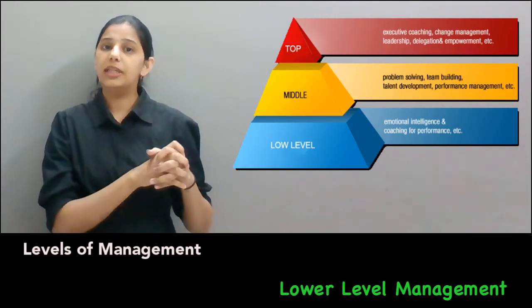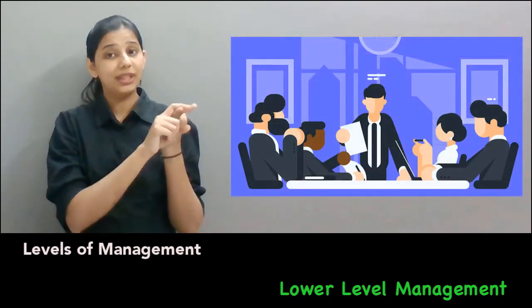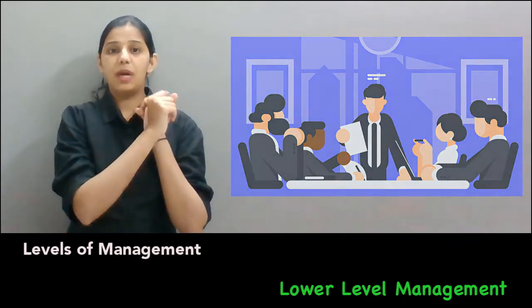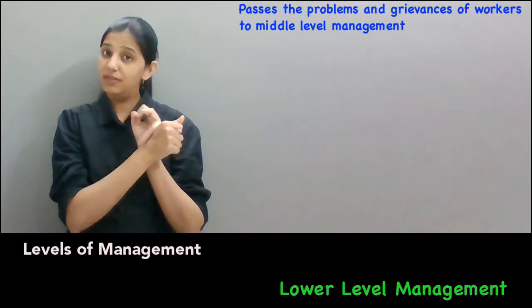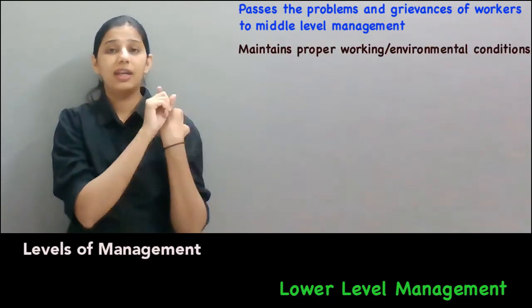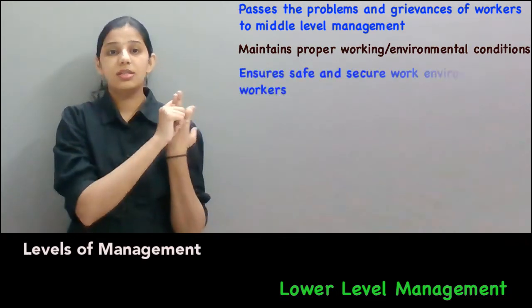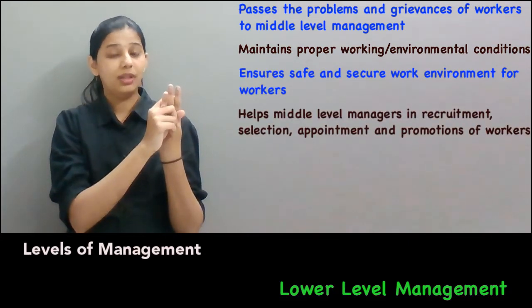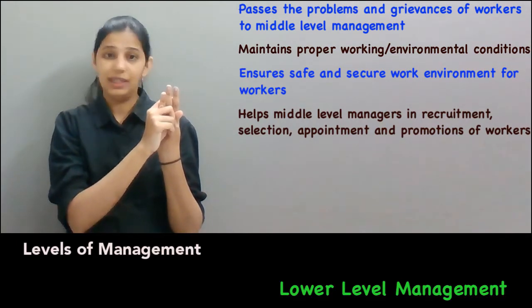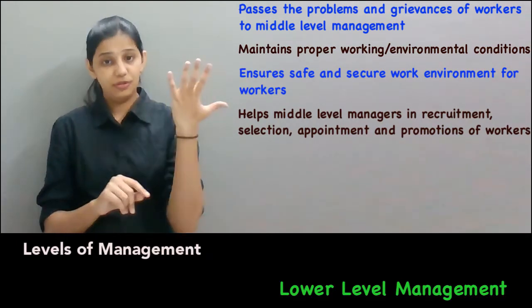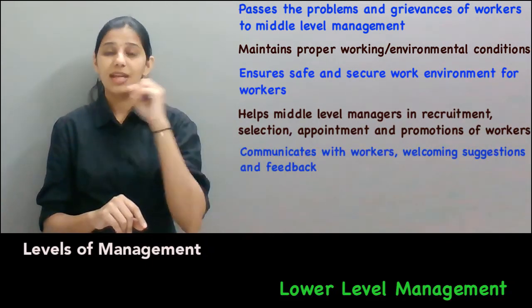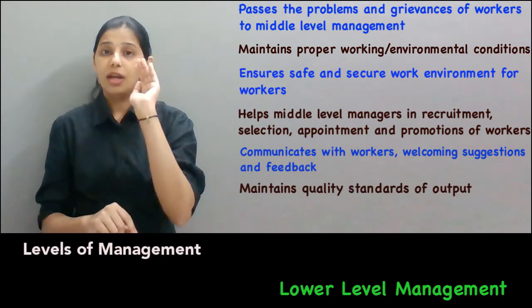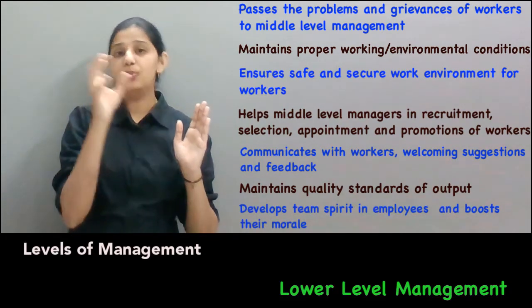Examples of lower level management include supervisors, superintendents, foremen, and clerks. The functions of lower level management are: passing problems and grievances of workers to middle level management, maintaining proper working and environmental conditions, ensuring a safe and secure work environment for workers, helping middle level management in recruitment, selection, appointment and promotion of workers, communicating with workers and welcoming suggestions and feedback, maintaining quality standards of output, and developing team spirit in employees and boosting their morale.